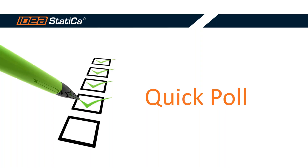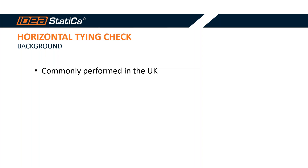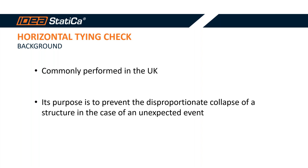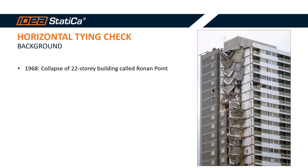Without further delay, let's jump into the introduction for the tying checks. In version 22.1 of Idea Statica, we have introduced a new type of analysis called the horizontal tying check, which is commonly performed in the UK. Its purpose is to prevent the disproportionate collapse of a structure in the case of an unexpected event, like an explosion, a vehicle impact, or any other event that could happen during the lifetime of a structure. It makes sense to have a look at the events that led to the concept of tying check.